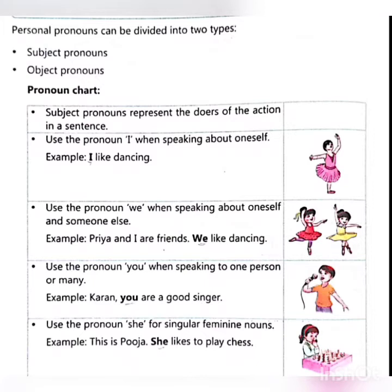Use the pronoun 'she' for singular feminine nouns. Example: This is Pooja. She likes to play chess.